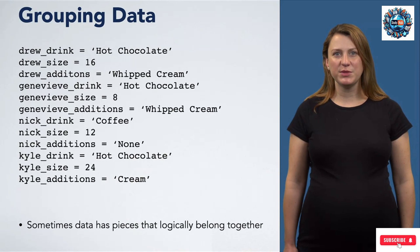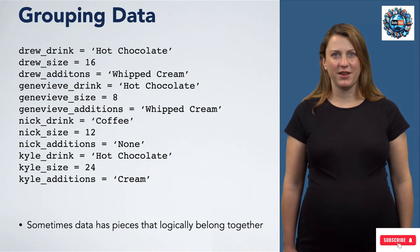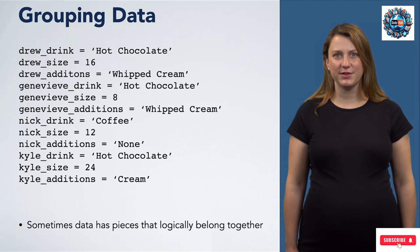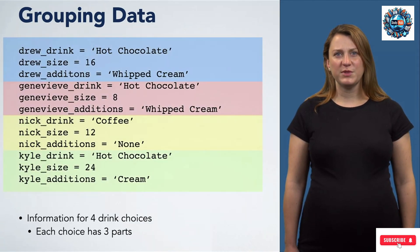Sometimes we have data that is made of multiple pieces that logically belong together. For example, here we have some information about our drink choices. Notice how we have four groups of data, each of which has the same three pieces.